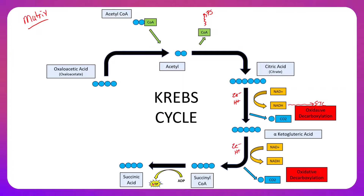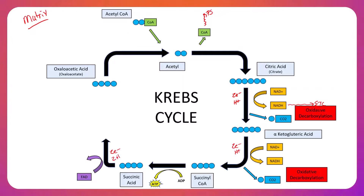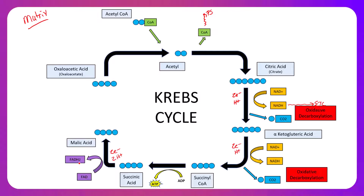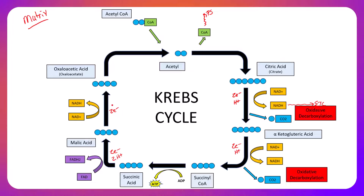Once succinic acid is produced, we squeeze more electrons and hydrogen ions out using FAD. FAD grabs a pair of electrons and two hydrogen ions, converting FAD into FADH2. That turns succinic acid into malic acid. We then have one more step: turning malic acid into our starting oxaloacetic acid, which requires oxidation by NAD+. NAD+ grabs a pair of electrons and a hydrogen ion, converting NAD+ into NADH and converting malic acid into oxaloacetic acid.